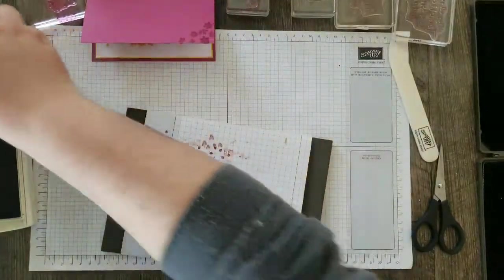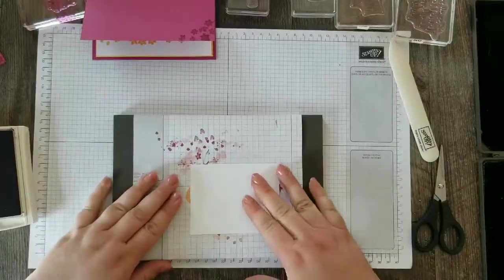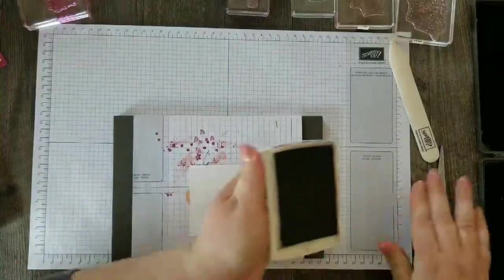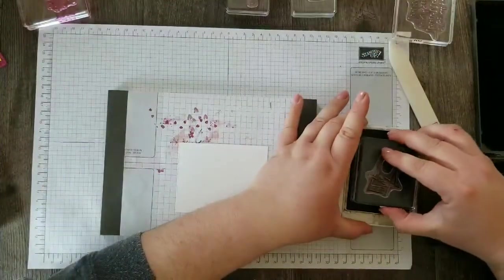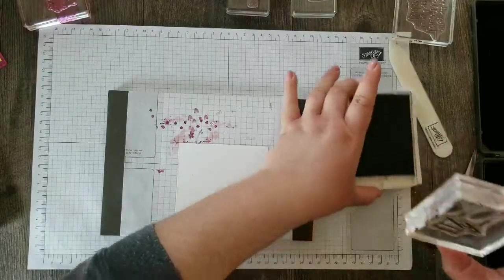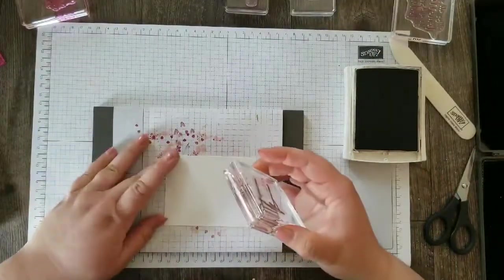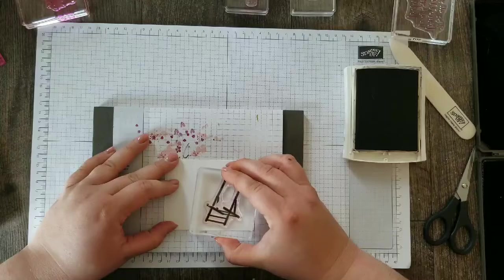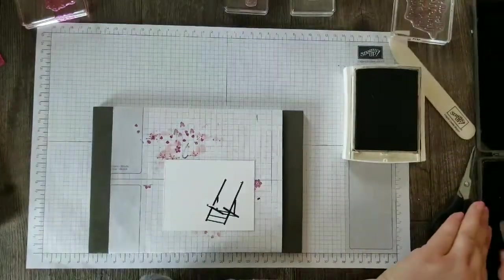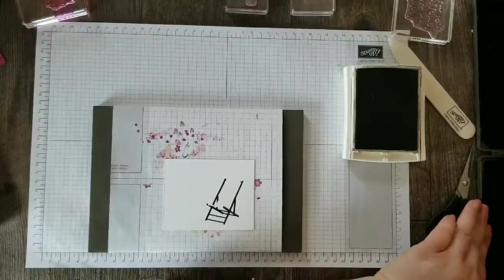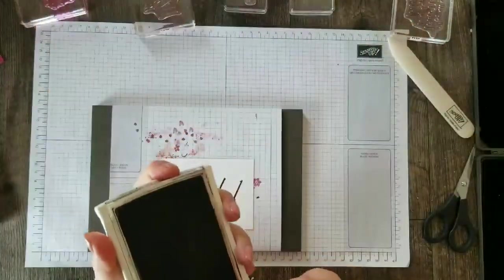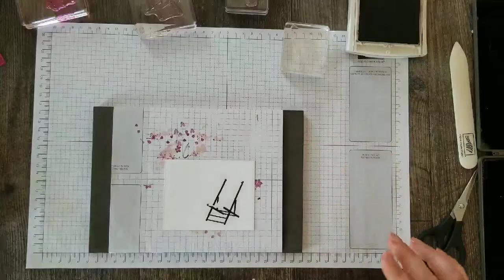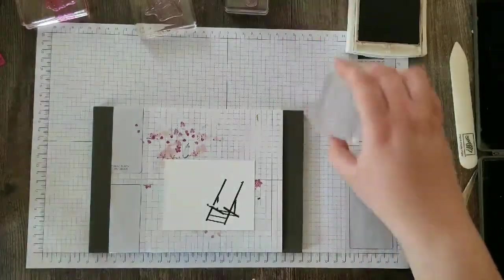The next thing I'm going to stamp is our card front layer. And we're going to be using some two-step stamps. So first I'm going to do the silhouette or the frame of my chair. And I stamped that in Early Espresso. I'm going to give that some time to dry. It doesn't take long with this ink.